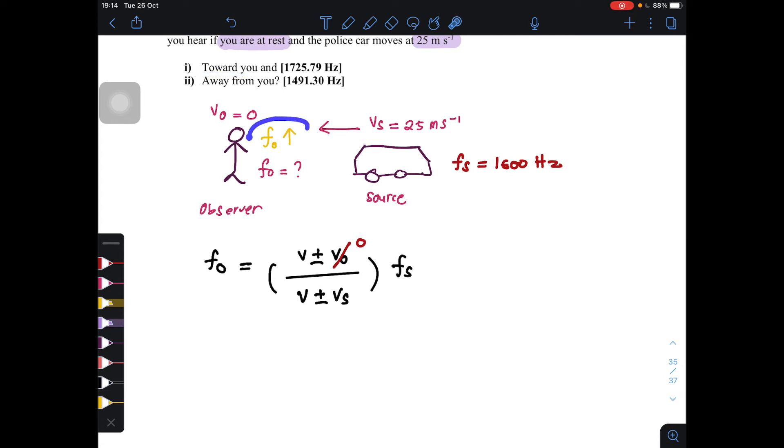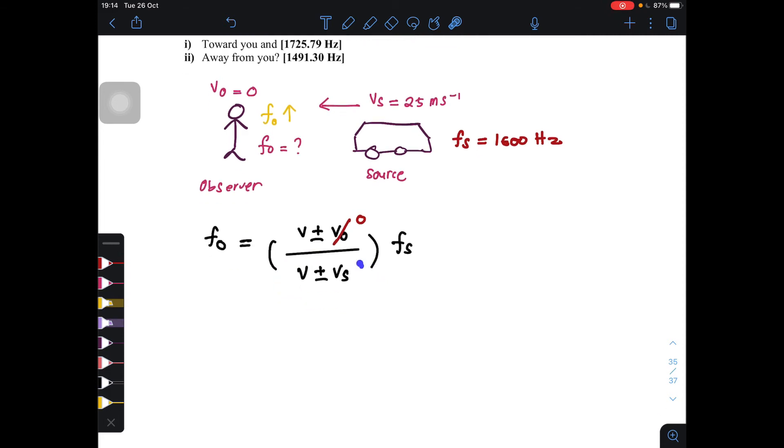the frequency that you hear will increase. So in order to get this higher, the whole thing here must be lower. So in order to get the whole thing here lower, we need to minus. So this is the equation: V divided by V minus V_s times f_s.